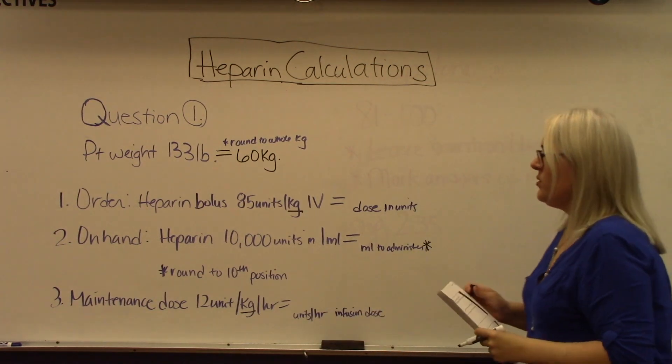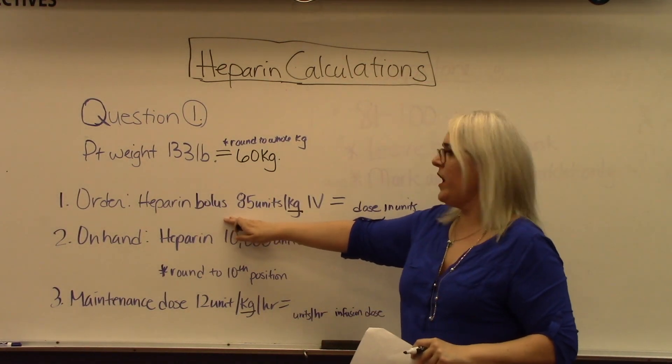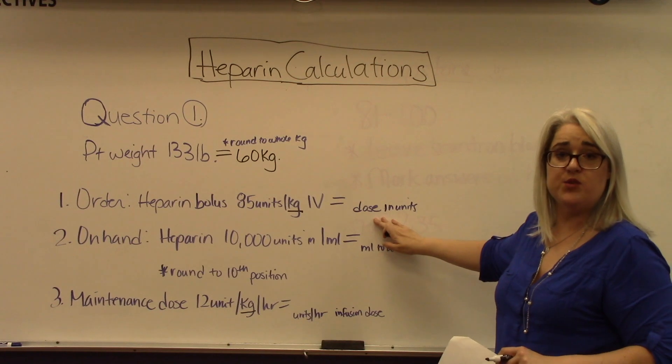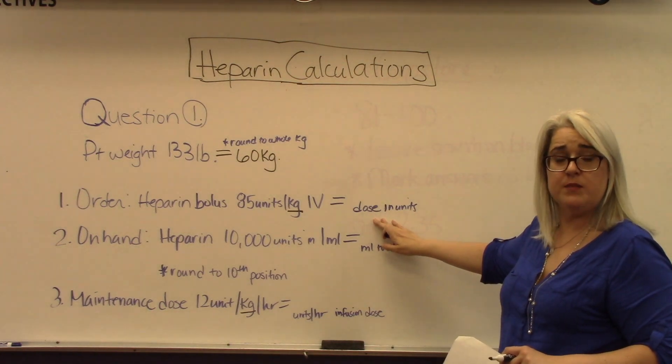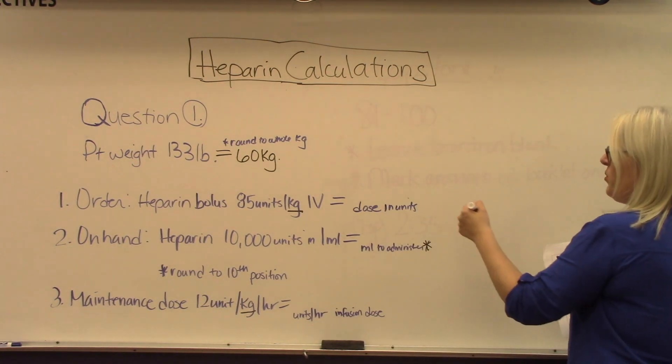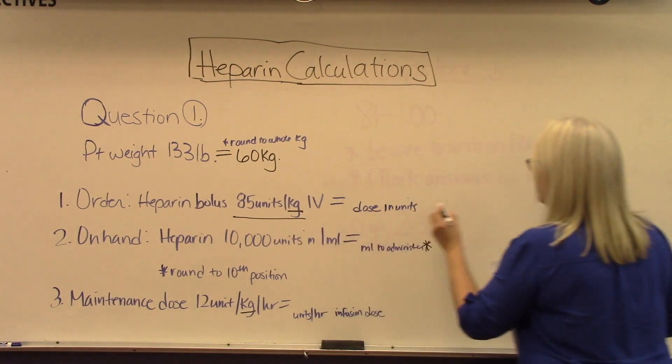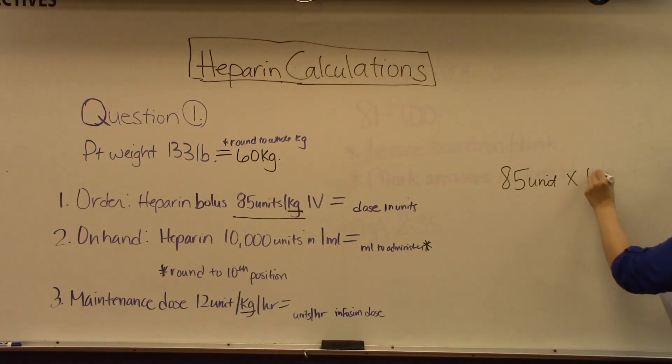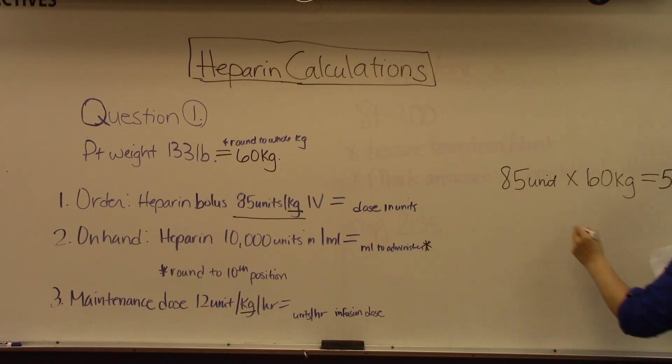The first part of the question is the order. We have an order for heparin bolus 85 units per kilogram to be administered IV. We need to calculate the dose in units because that's the measurement unit for heparin. To do this calculation, we multiply 85 units times our 60 kilograms, and that equals 5,100 units. This is our desired dose.